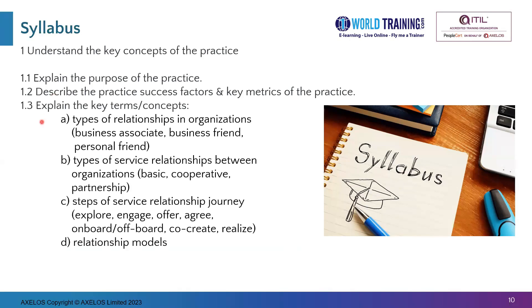There are several key terms and concepts such as types of relationships in an organization, which are namely business associate, business friend, and personal friend. There are also service relationships between organizations such as basic, cooperative, and partnership. And then there are the steps of a service relationship journey such as explore, engage, offer, agree, onboard or off-board, co-create, and realize. And then we have the relationship models as well.